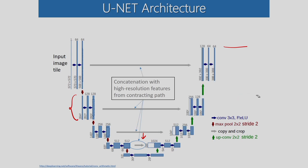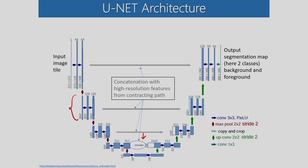We get the output segmentation map, and in this case we have only two classes: one is the background and another is the foreground. So we are getting the output segmentation map — it is a two-class problem because we have the background and the foreground. Segmentation is the separation of the foreground and the background.